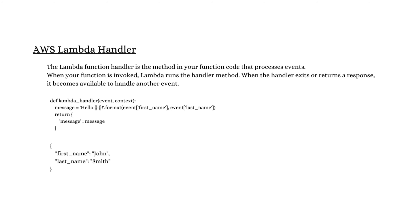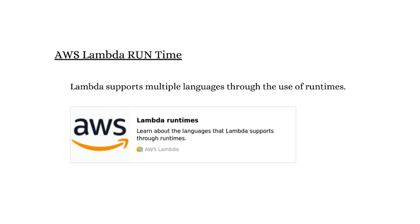The first requirement is the handler. If you have already worked with different languages, you know what a handler is. Lambda starts executing the code from the handler — it is the first point from where we write our code. The second requirement is the runtime environment, where we tell Lambda which language we are going to use. For example, if I want to write my code in Python, the runtime environment is Python. We can also select other languages like Java or Node.js.